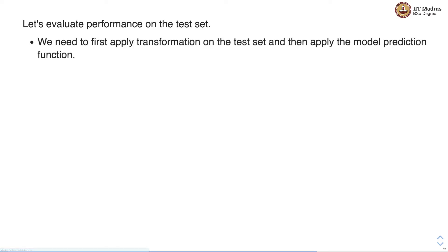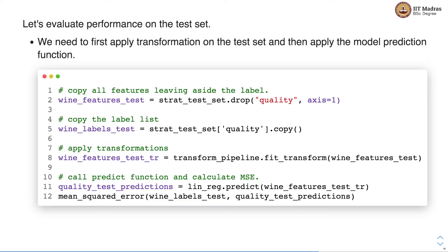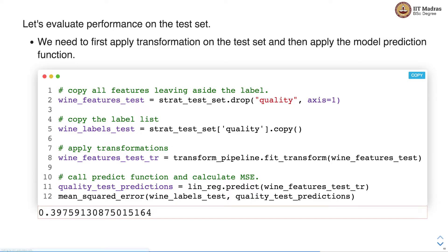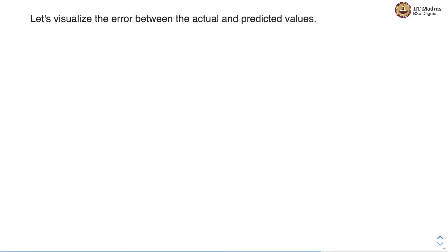We evaluate the performance on the test set by first applying the same transformation pipeline as the training set, and then applying the model prediction function. We compare the actual labels with the predicted labels and calculate the mean squared error using the score function. The mean squared error on the test set is 0.39.